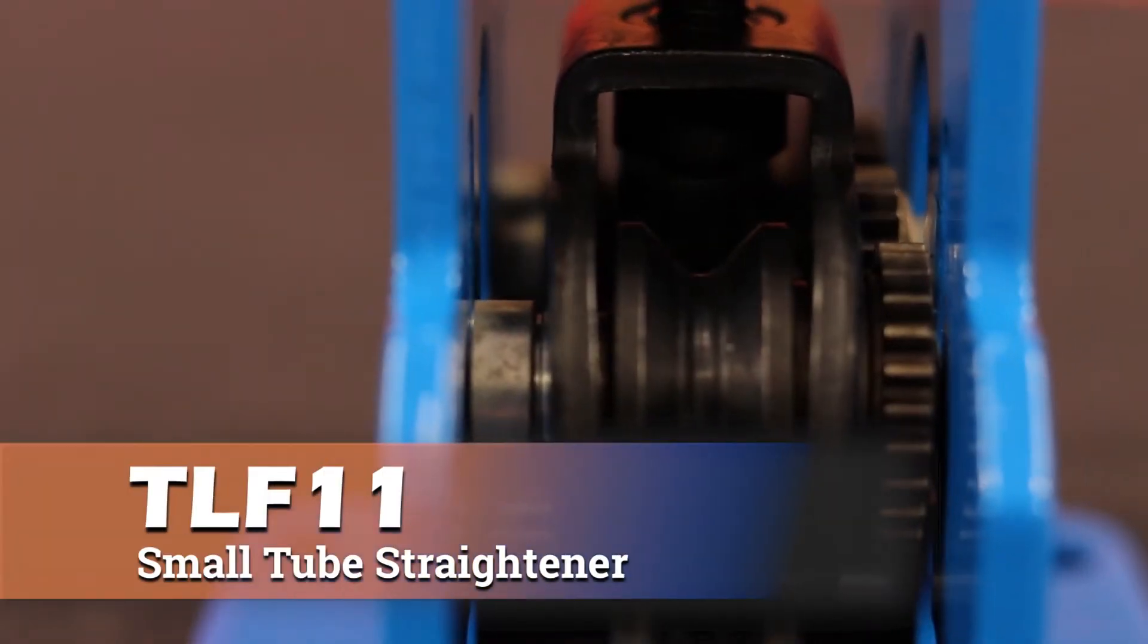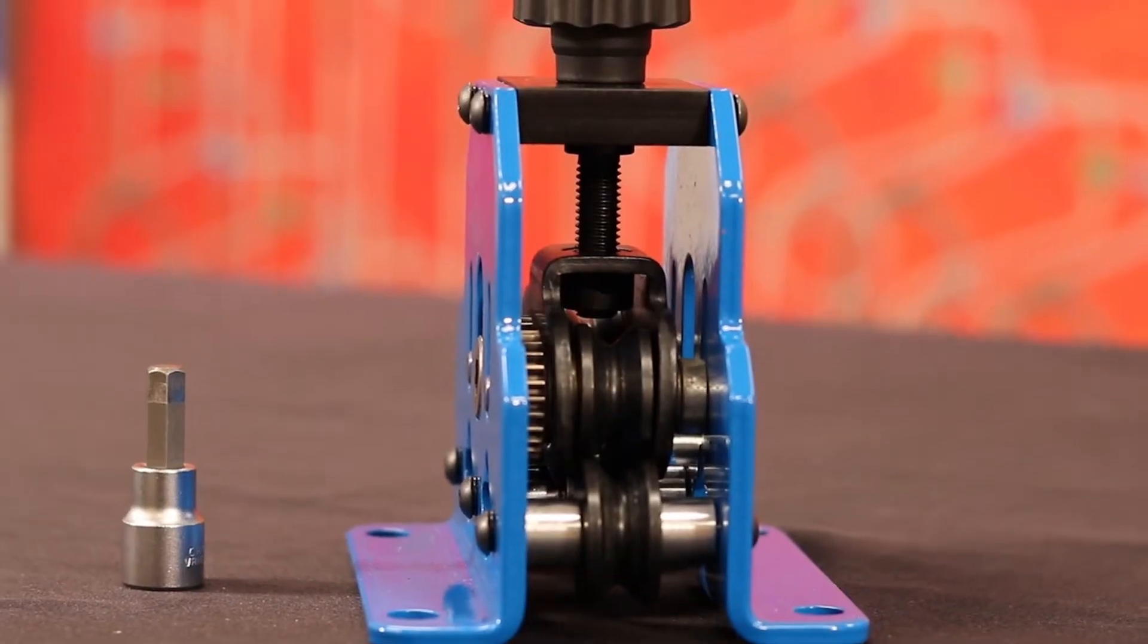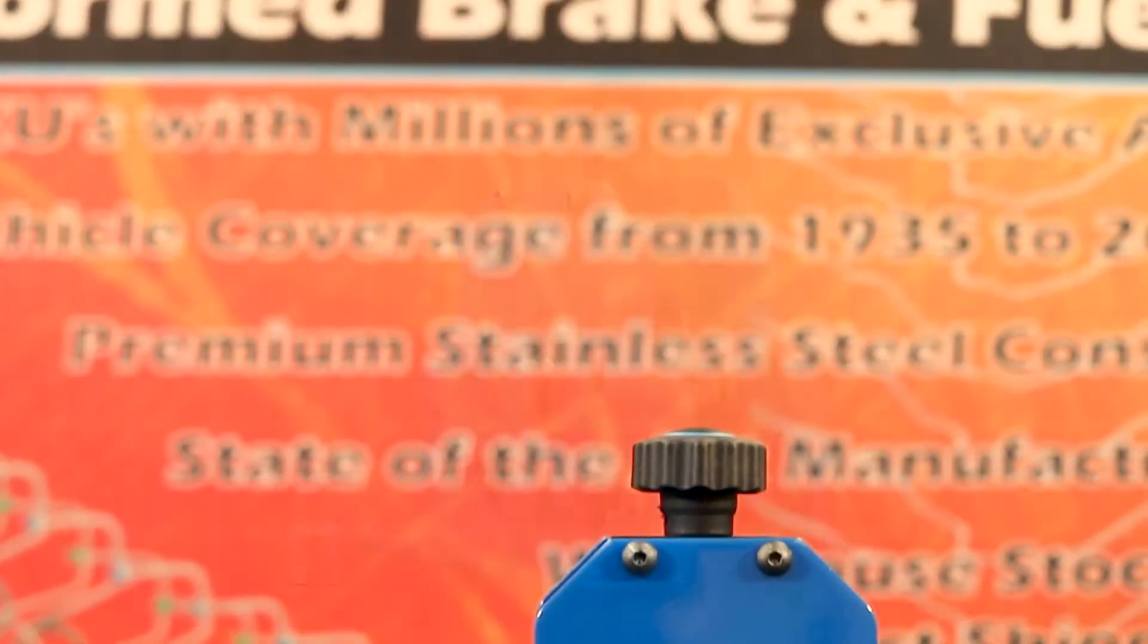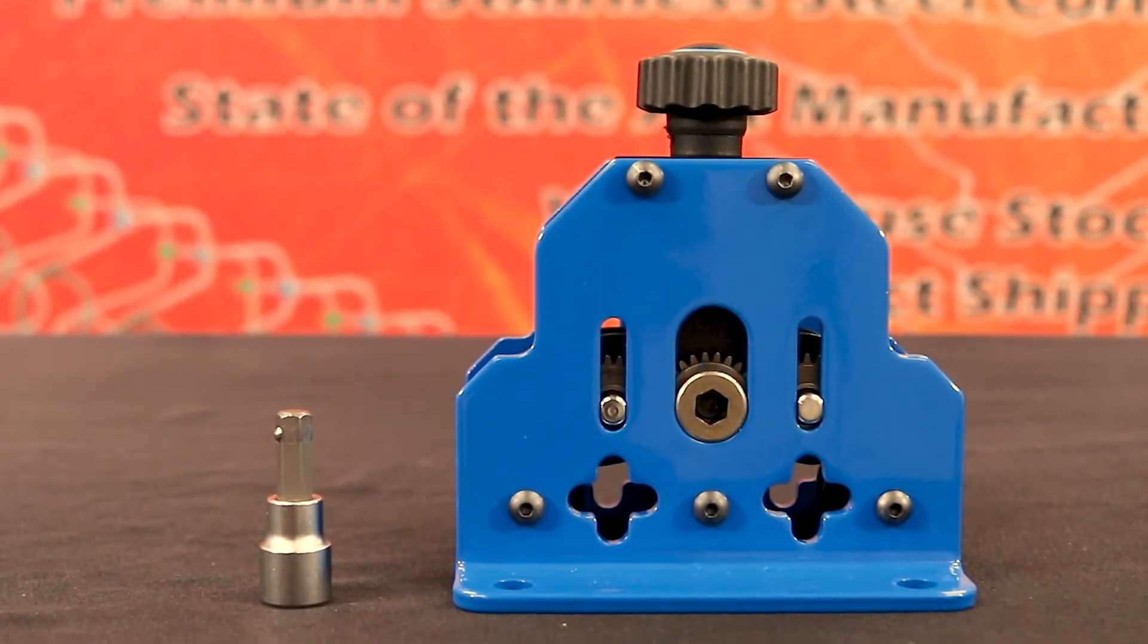This mini tube straightener is fully adjustable from 3/16ths to 5/16ths. It can be vise or bracket mounted and used on all tubing materials from copper nickel to stainless steel.